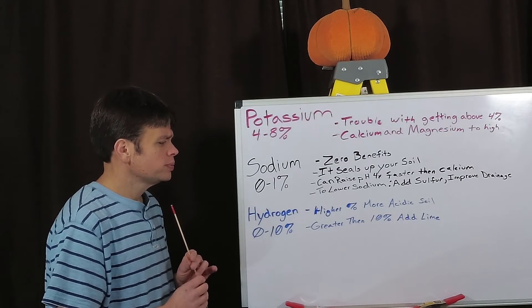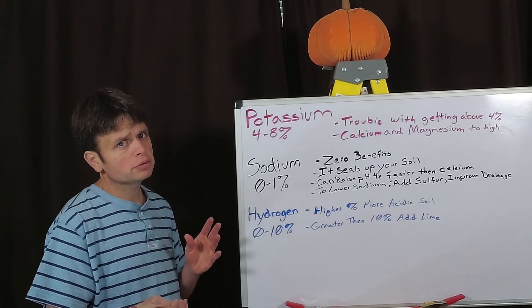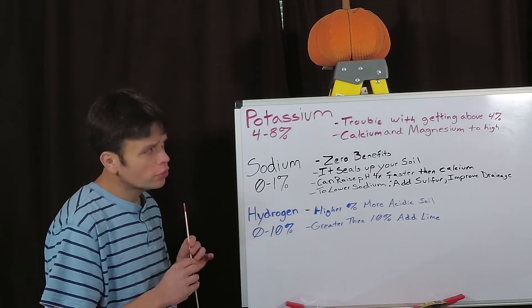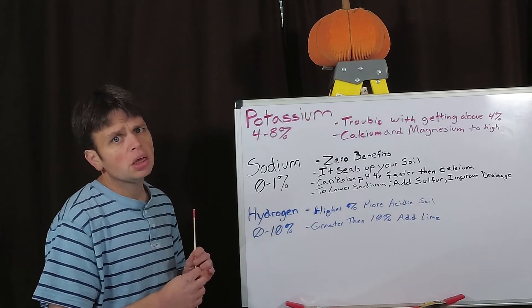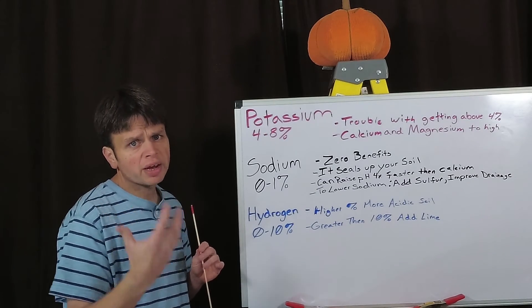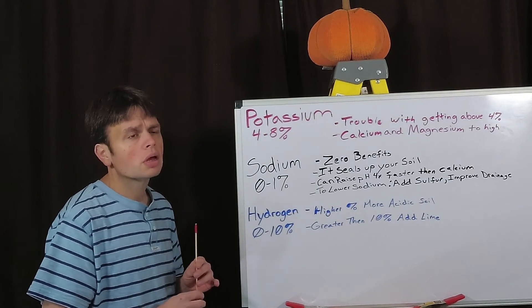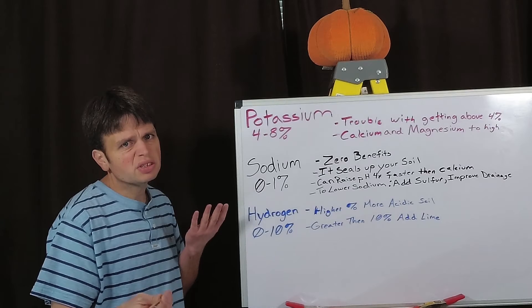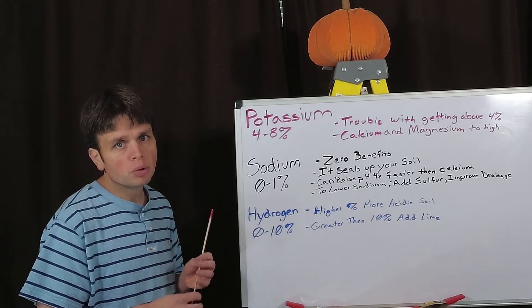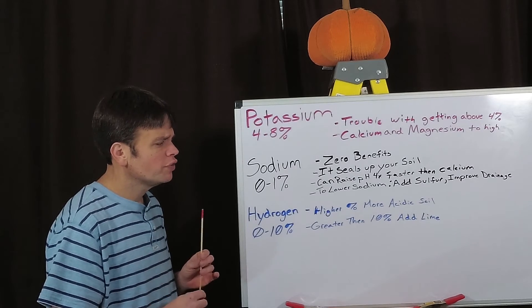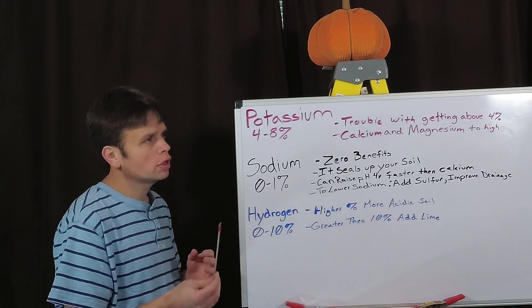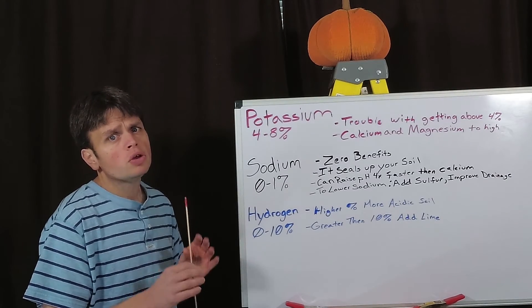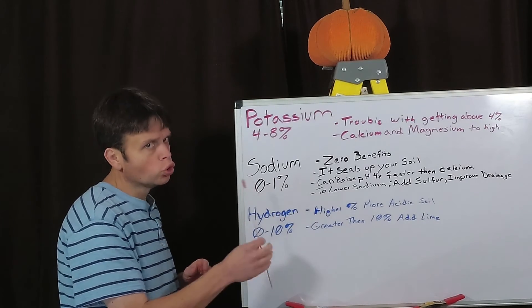So now hydrogen. There's even less to say about hydrogen. Basically what hydrogen does with the whole scheme of the base saturation is it's basically your acid, it's your sulfur. And the higher this percentage, it's basically just telling you your soil is a little more acidic. And if you're getting too close to 10 percent, and if you're able to achieve this get above 10 percent, you need to lower that down, you need to be no more than 10 percent.